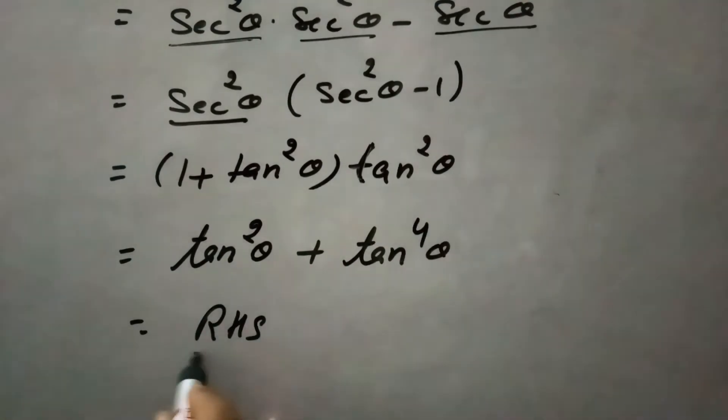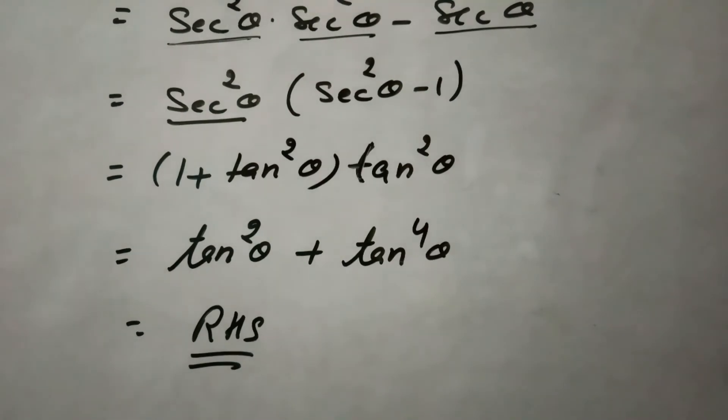to right hand side of this equation. So we have proved that secant 4 theta minus secant square theta equals to tan square theta plus tan 4 theta.